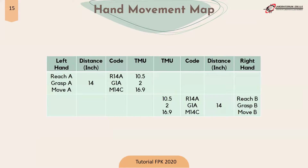The next topic is the hand movement map. The way to write the hand movement map is as a sum or recapitulation of the TMU values for the right hand and the left hand. The right hand and left hand are not added separately. If there is a case where the right hand and the left hand perform the same movement at one time, the TMU value used is the longer one.